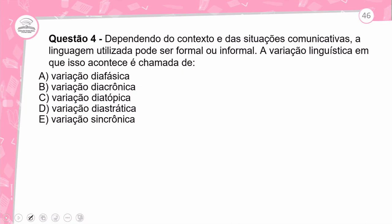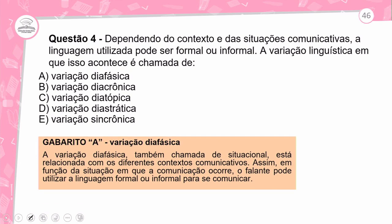Questão 4: dependendo do contexto das situações comunicativas, a linguagem utilizada pode ser formal ou informal. A variação linguística em que isso acontece é chamada: A) variação diafásica; B) diacrônica; C) diatópica; D) diastrática; E) variação sincrônica. Gabarito: a variação diafásica, letra A, também chamada de situacional, está relacionada com os diferentes contextos comunicativos. Em função da situação em que a comunicação ocorre, o falante pode utilizar linguagem formal — numa entrevista de emprego — ou linguagem informal com a família e amigos.